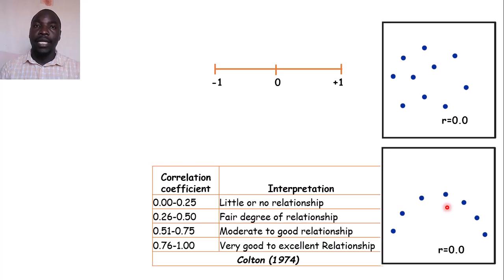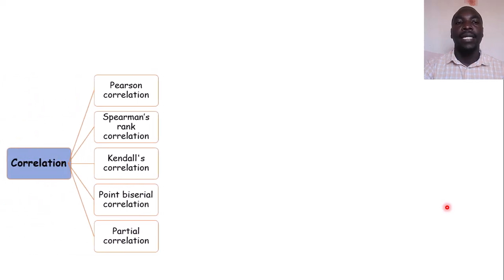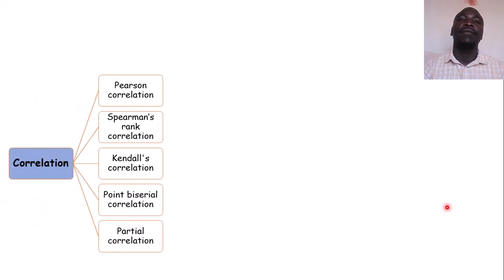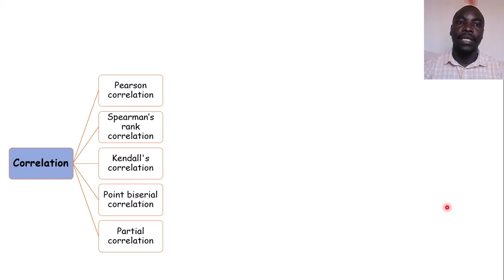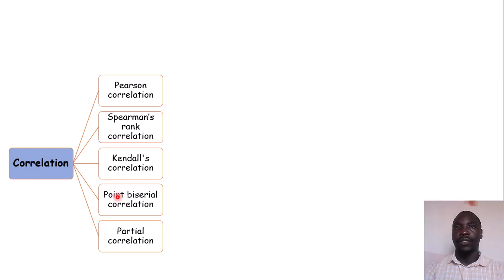Visualization is very important here. We could get a correlation coefficient of 0, but there may still be a relationship — just not a linear one. In correlation, we are looking for a linear relationship. With that being said, let's look at the different types: Pearson's correlation, Spearman's rank correlation, Kendall's Tau B correlation, point-biserial correlation, and partial correlation.